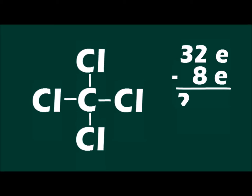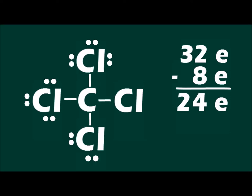Subtract the number of electrons used in building the bonds from the total valence electron count for the molecule. Arrange the remaining number of electrons around each of the terminal atoms before adding electrons to the central atom. Each atom needs to satisfy an octet, so each atom needs access to eight electrons.